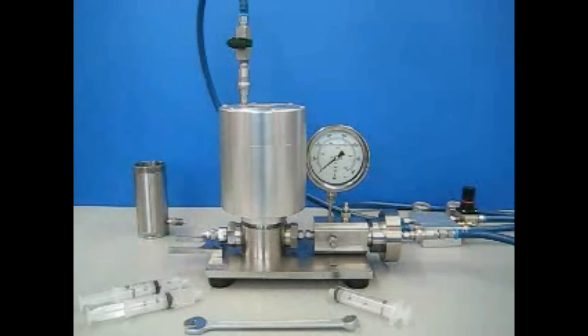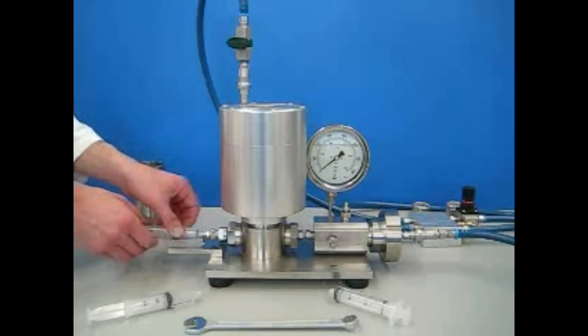A full syringe is connected to the inlet of the machine. An empty syringe is placed on the outlet to collect the homogenized sample.